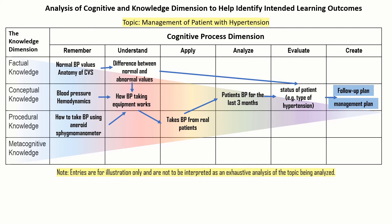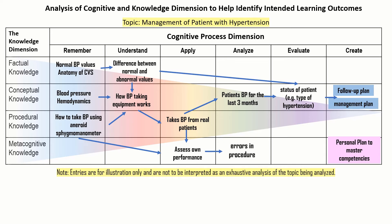You see how these particular things work together as a process, starting from the simple cognitive process of remembering to the more complex cognitive process of creating, based on the knowledge they acquired from the beginning. You can also use this to clarify metacognitive knowledge in relation to a personal plan to master competencies. Students need to first assess their own performance, identify errors in their own procedures, and clarify their own performance level — knowing what they know and what they don't know — to prepare a personal plan to master the required competencies.